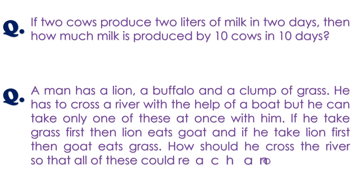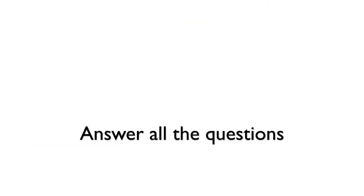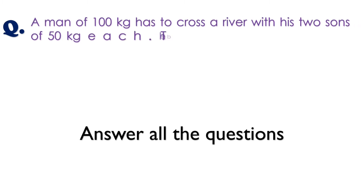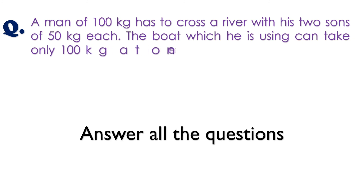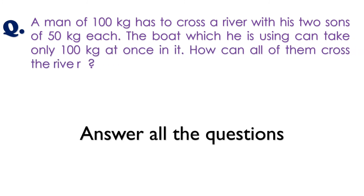If he takes the grass first, the lion eats the goat; if he takes the lion first, the goat eats the grass. How should he cross the river so that all of them reach the other bank? Question three: a man of 100 kg has to cross a river with his two sons of 50 kg each. The boat can take only 100 kg at once. How can all of them cross the river?